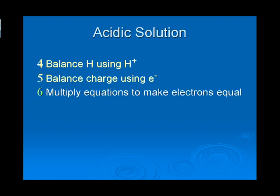Step number six, then, is to make the electrons equal. So if you have two electrons, for example, being lost in the first half reaction, three electrons being gained in the second, you would multiply the top reaction by three to make it six electrons, and the bottom reaction by two to make it six electrons. So the key is getting the electrons equal.